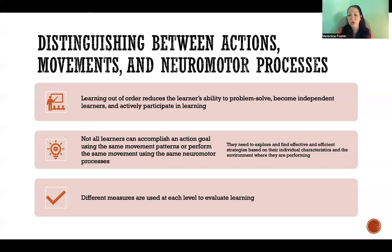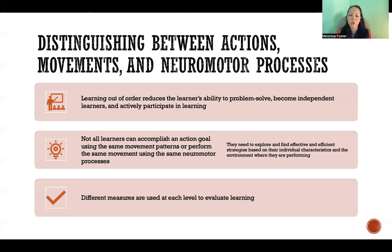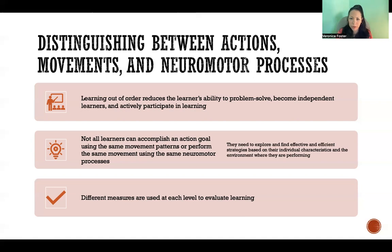Finally, we need to know the difference between actions, movements, and neuromotor processes because we use different types of measurements and technology to evaluate each of those three different levels of learning. We need to know what we're actually evaluating in order to choose the right process for that evaluation. Thank you so much for watching — I'll see you in the next video.